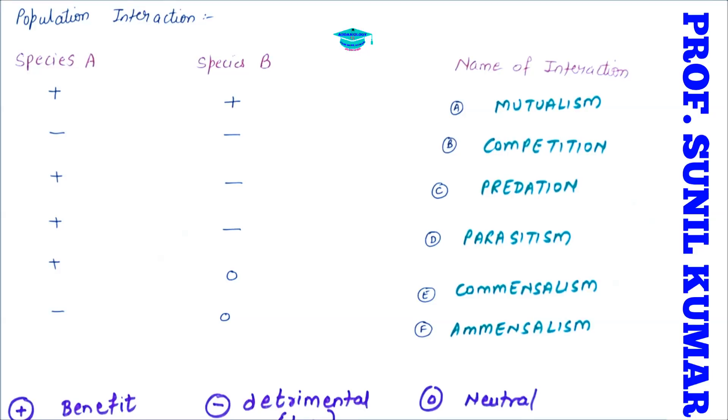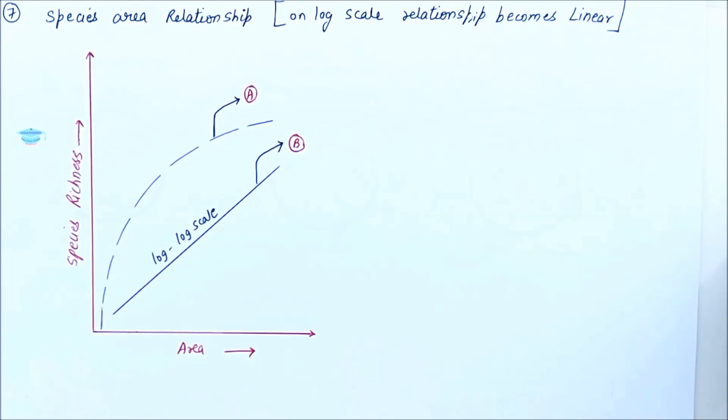When you talk about amensalism, one of the example is penicillium growing on the bread and the penicillium produces some chemical to kill the bacterias on the bread. But by the death of the bacterias, penicillium is not getting benefited as well as it is not getting harmed, whereas the bacterias are getting harmed. Another example of amensalism is black walnut trees where the root of the trees releases a chemical called juglon and it does not allow any grass to grow around it.